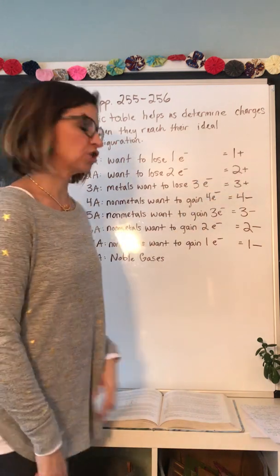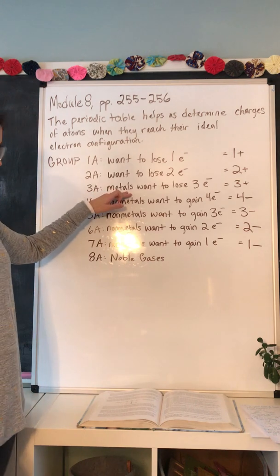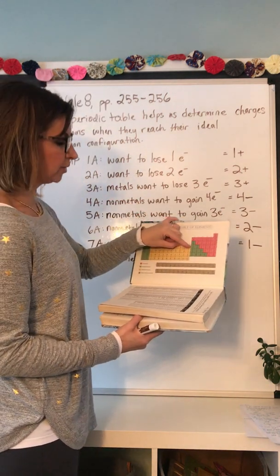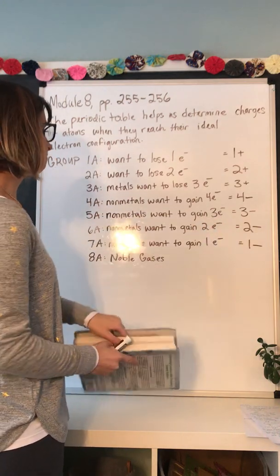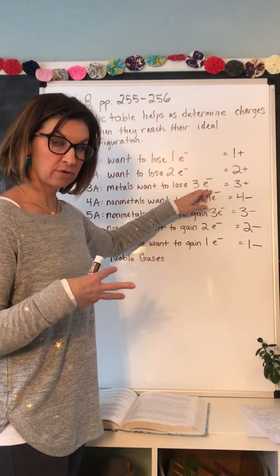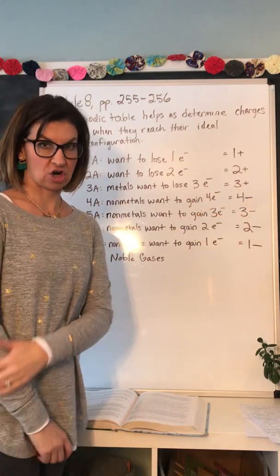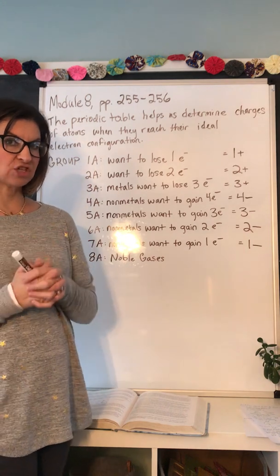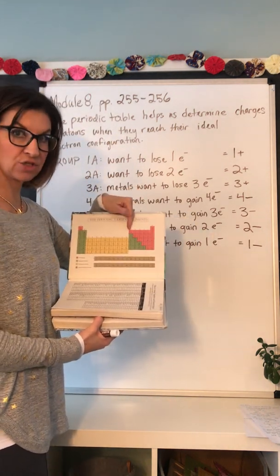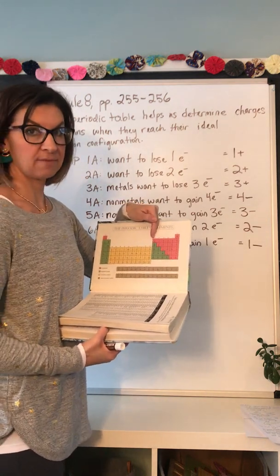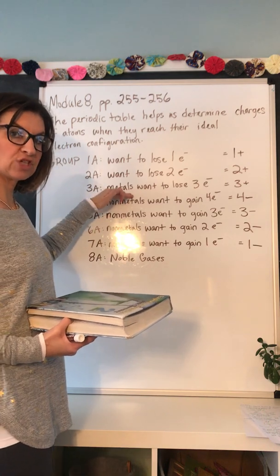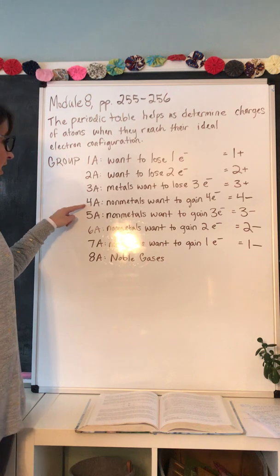Group 3A — the metals in this group are the elements to the left of the jagged line. In group 3A, we're talking about aluminum, gallium, indium, and thallium. Those metals want to lose three electrons. If they lose three electrons, they'd have three more protons than electrons, giving them a 3+ charge. Note that boron is a non-metal in group 3A — it's to the right of the jagged line and does not follow this rule. This rule for 3A applies to the metals only.